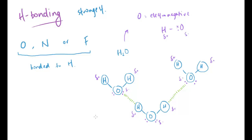With a different example — hydrogen fluoride, HF — it's the same concept. Fluorine is very electronegative, so the electrons lie much closer to the fluorine end. We end up with lone pairs on the fluorine, and the same attraction occurs between the hydrogen and the fluorine's lone pairs. We could also do this with ammonia — it's the same concept: lone pairs with hydrogens, attraction between them.